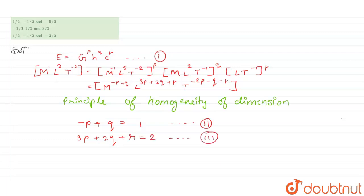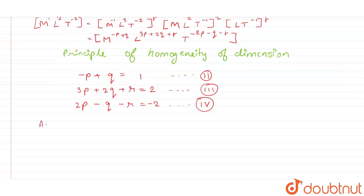Now, adding equation 3 and 2p minus q minus r is equal to minus 2, which will be our equation 4. Now, adding equation 3 and 4, we get p plus q is equal to 0.